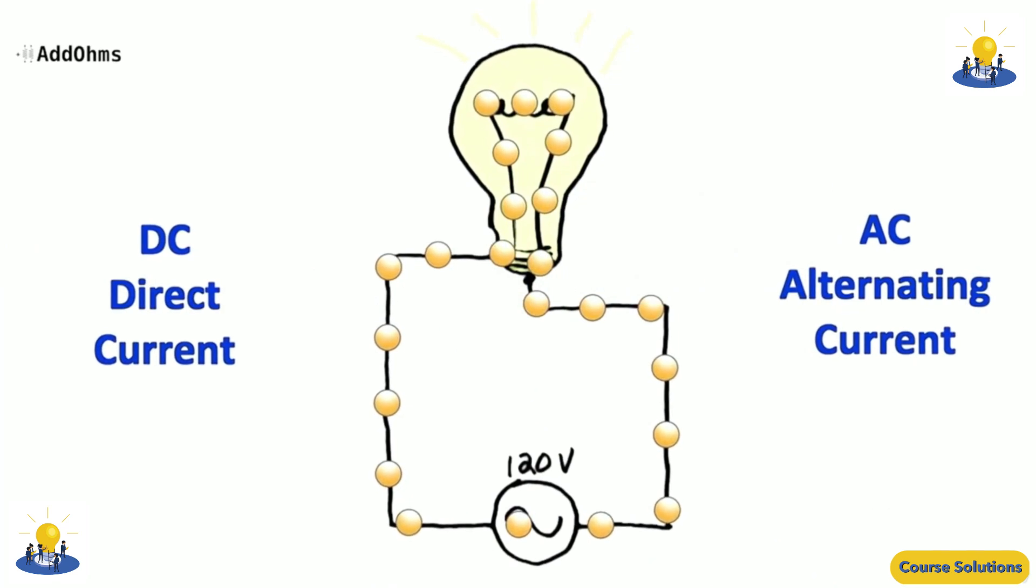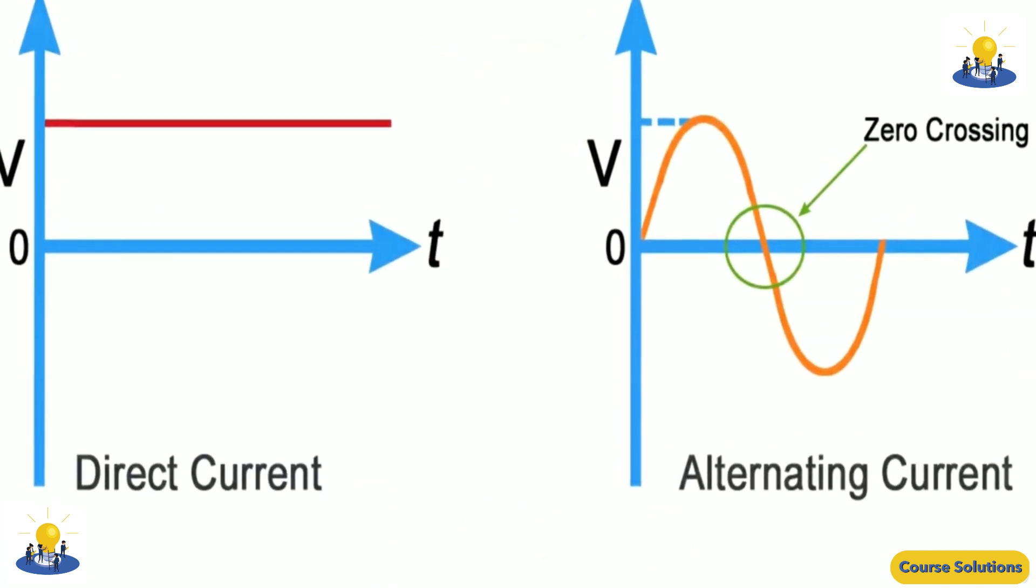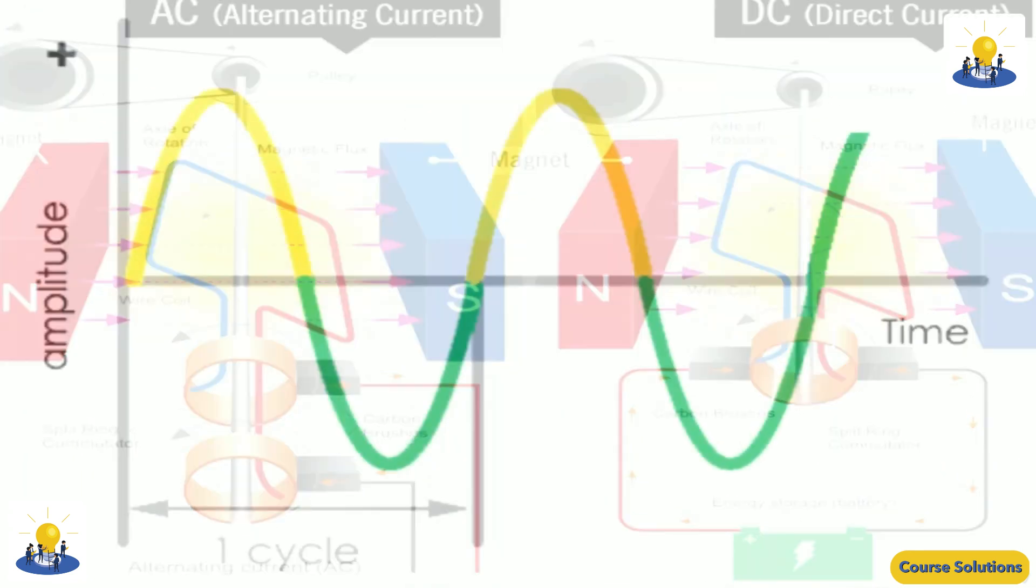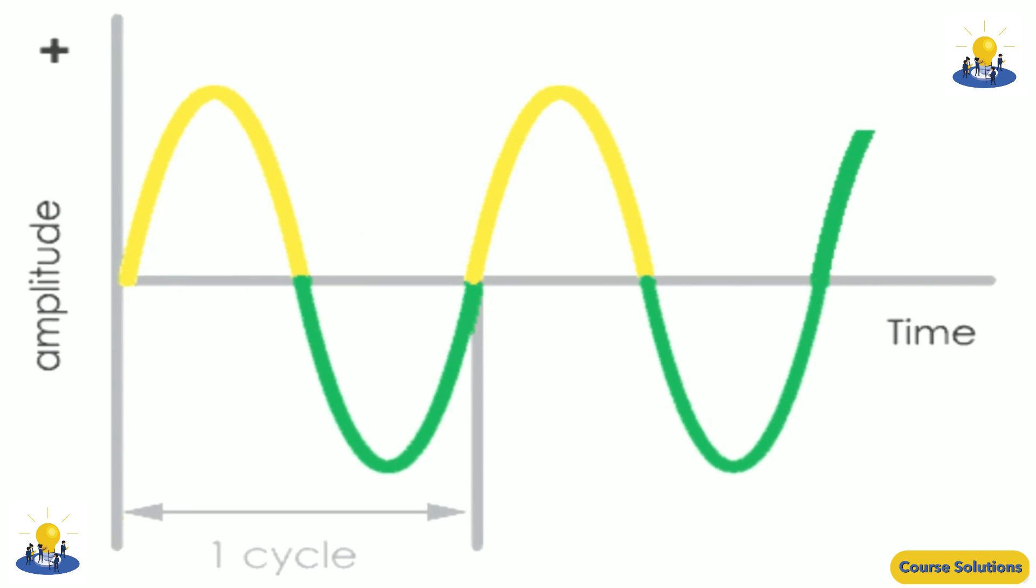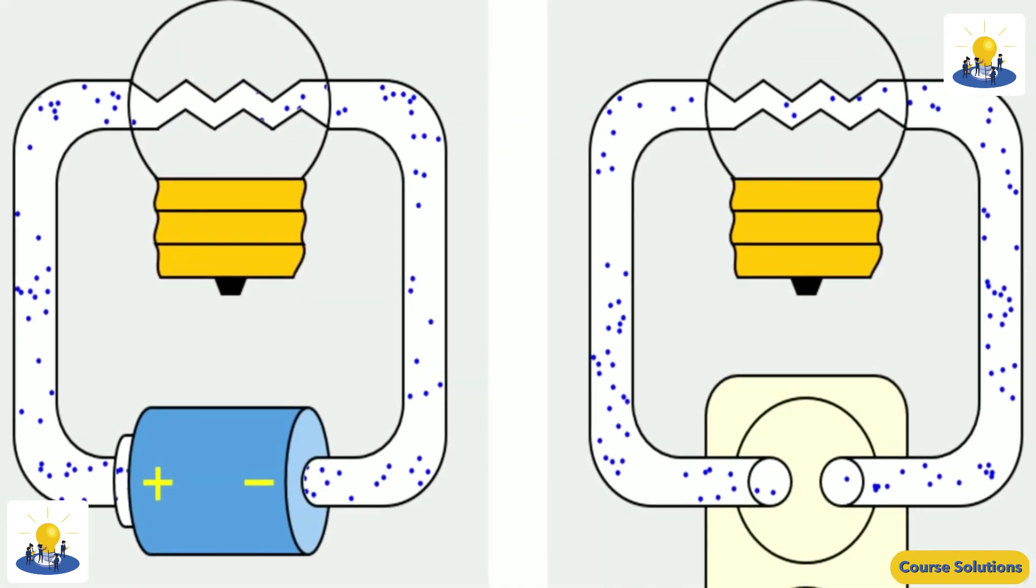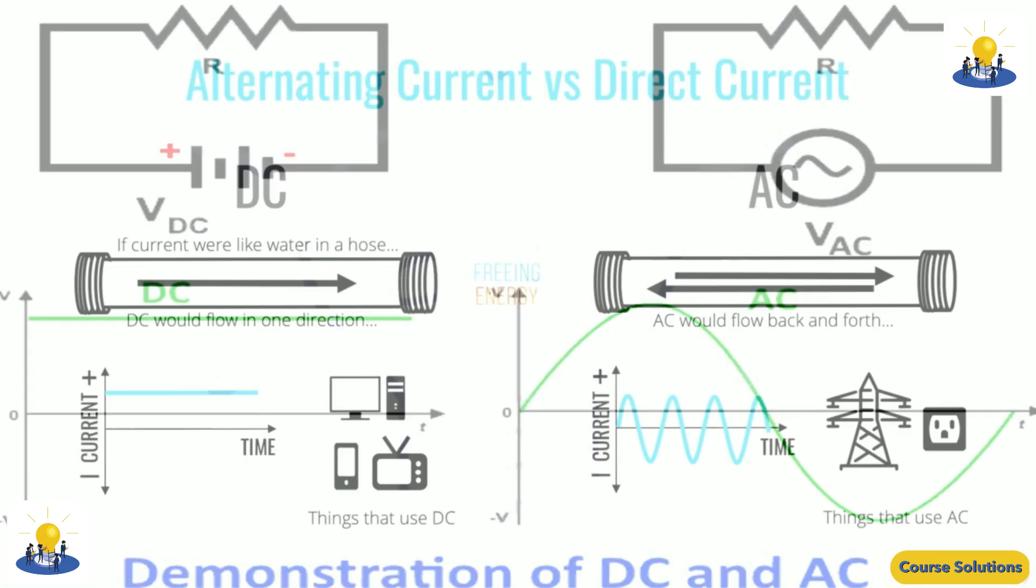Direct current, DC, is the one directional flow of electric charge. An electrochemical cell is a prime example of DC power. Direct current may flow through a conductor, such as a wire, but can also flow through semiconductors, insulators, or even through a vacuum as an electron or ion beams.